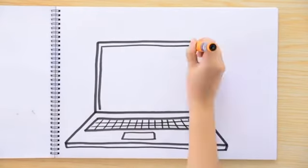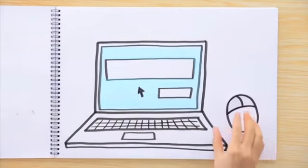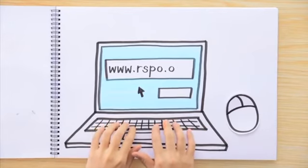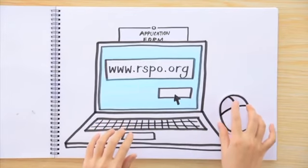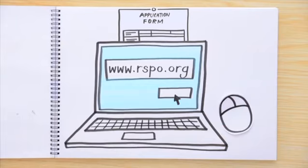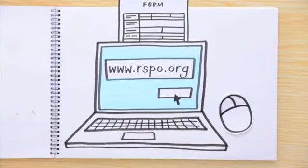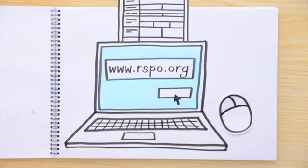Applying is easy. Just log on to the RSPO website and fill up the application form, providing details of the project and organizational background, as well as how the project contributes to RSPO objectives.